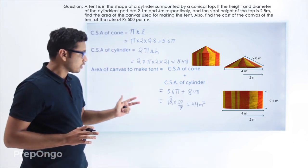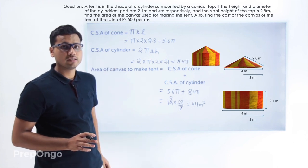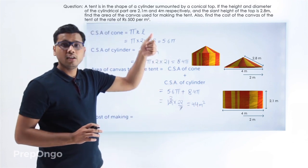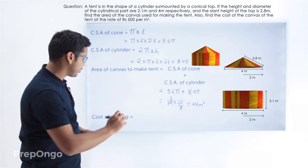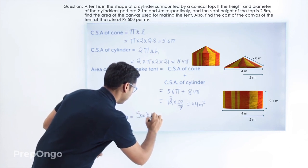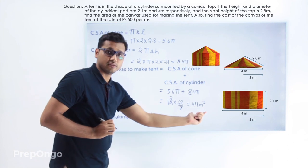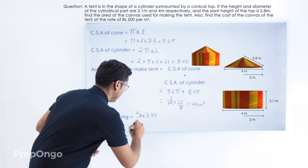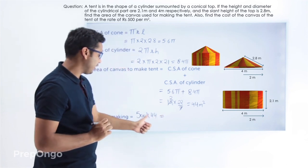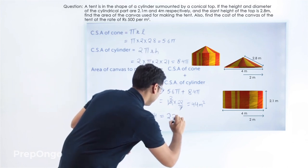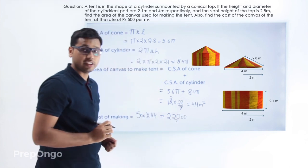Now we have to find out the cost of this canvas. The cost can be easily found by multiplying the area by the cost per meter square. So this will be 500 × 44 = 22,000 rupees. The total cost of the canvas to make the tent is 22,000 rupees.